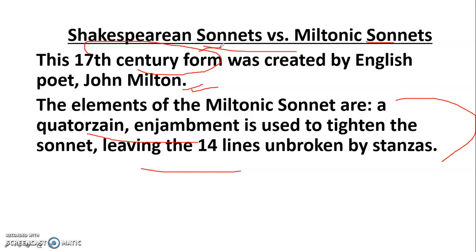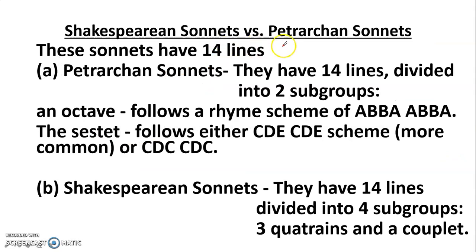Next, Shakespearean sonnet versus Petrarchan sonnet. Both sonnets have 14 lines, so the question arises: how are they different? The primary difference between the Shakespearean sonnet and the Petrarchan sonnet is the way the poem's 14 lines are grouped — this is the main structural distinction.